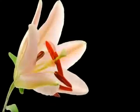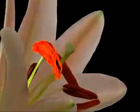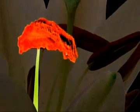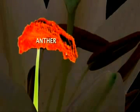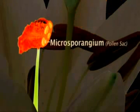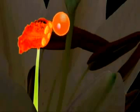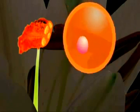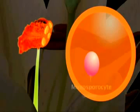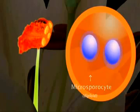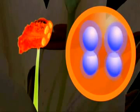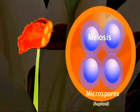The development of male gametophytes and pollen formation starts in the flower's anthers in one of four microsporangia, or pollen sacs. Each pollen sac holds numerous diploid microsporocytes, or microspore mother cells. Each microsporocyte inside a pollen sac undergoes meiosis to form four haploid microspores.